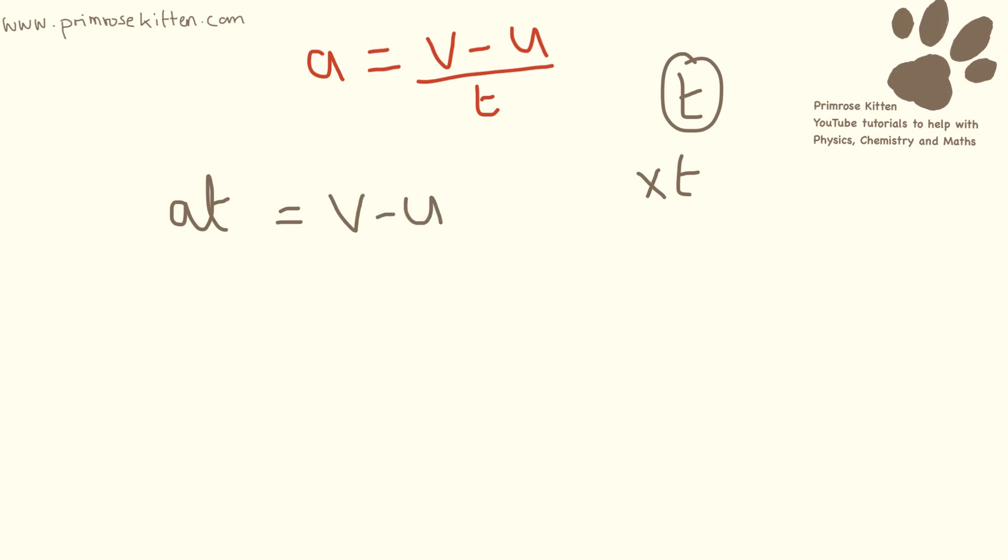A slightly easier one than the last one because T is currently times by A. So we just need to divide that by A. And we get T equals V minus U divided by A.